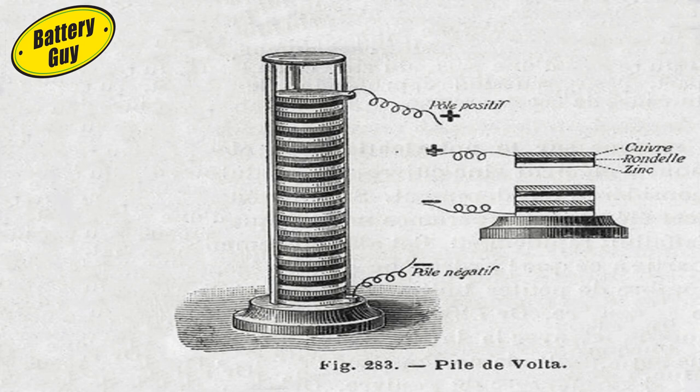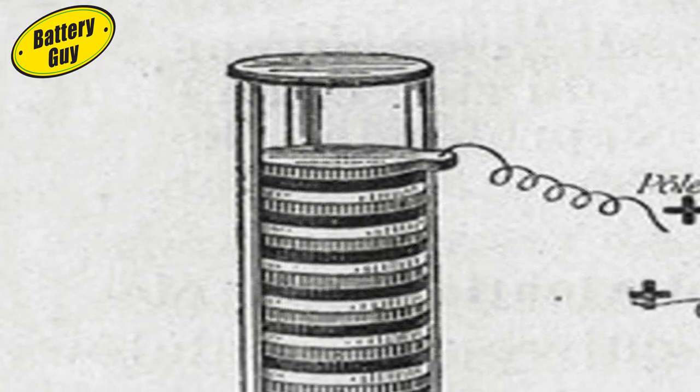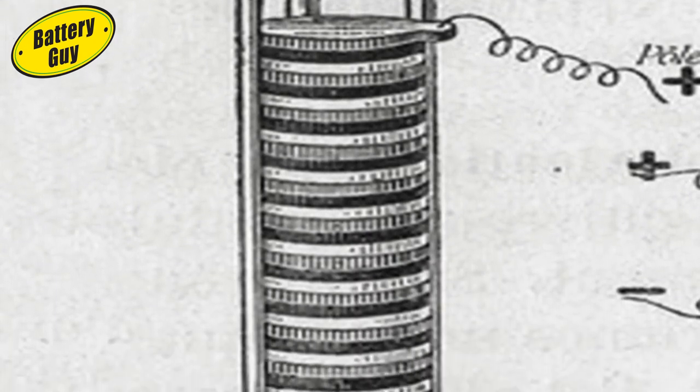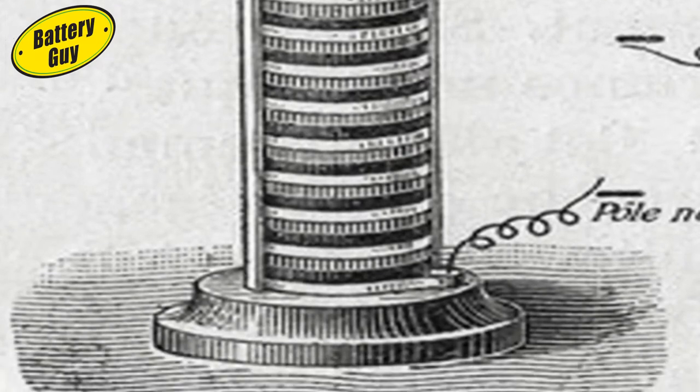Over 200 years ago, Alessandro Voltaire invented the first battery. He discovered that by placing copper and zinc discs on top of each other and separating each with a brine-soaked cloth,